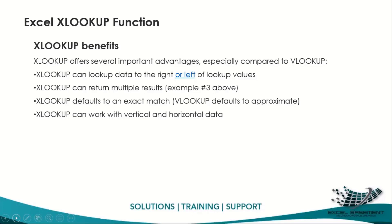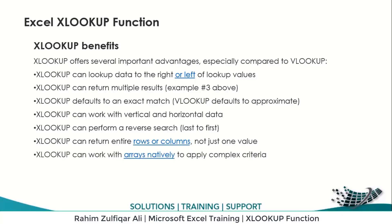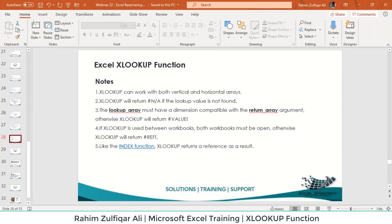XLOOKUP works with both horizontal and vertical data, so there's no need to choose between VLOOKUP and HLOOKUP. XLOOKUP can perform a reverse search, which is not available in VLOOKUP or INDEX-MATCH. XLOOKUP can return entire rows or columns through spilling, and it works with arrays natively to apply complex criteria.